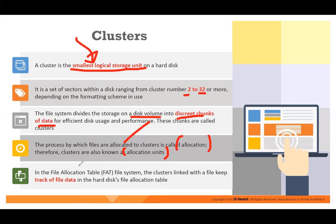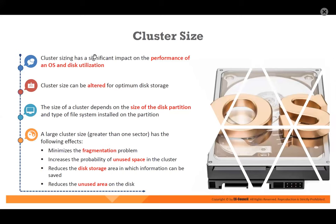In the FAT file system, clusters linked with the file keep track of the file data. The hard disk file allocation table — FAT file system — is where we say the starting point of the file. Cluster sizing is important because it impacts performance. When you format a hard disk, it asks you the cluster size. If you don't have a proper cluster size, it will impact performance and disk utilization, but it can be altered for optimal disk storage.